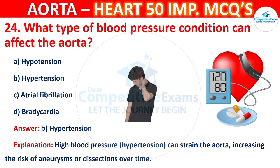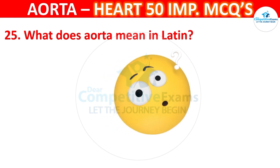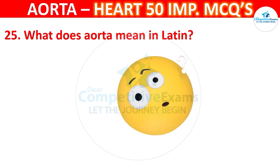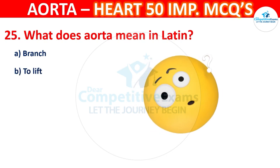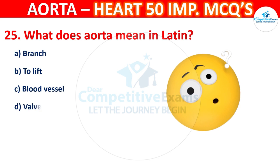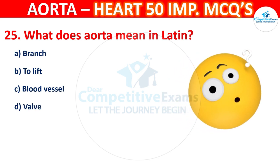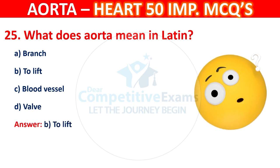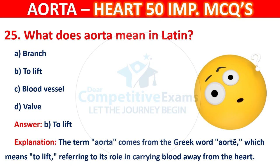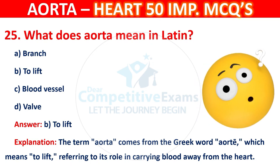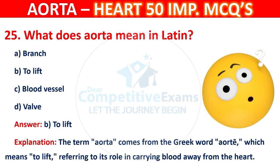Question number 25: What does 'aorta' mean in Latin or Greek? Options are branch, to lift, blood vessel, or wall. The correct answer is B — to lift. The term aorta comes from the Greek word 'aortē', which means to lift, referring to its role in carrying blood away from the heart.